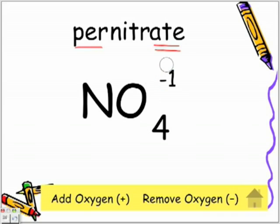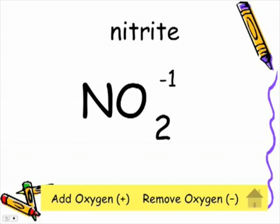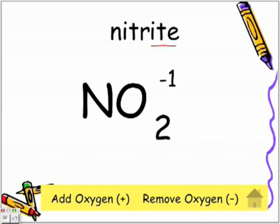Now let's remove the oxygen. If we remove the oxygen, we're back to normal, back to our original polyatomic. Now we're going to remove an oxygen from the original polyatomic, making it NO2. Notice the name change - we are adding an ITE ending when we remove one oxygen.